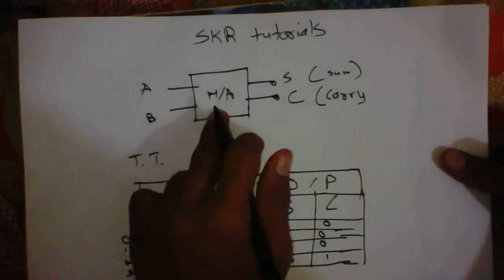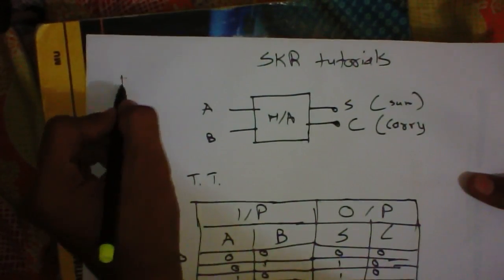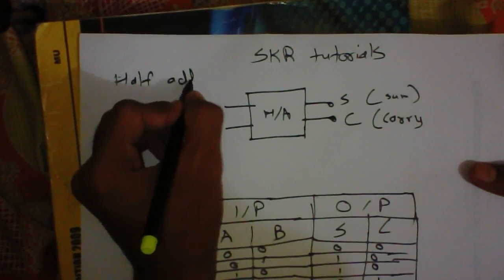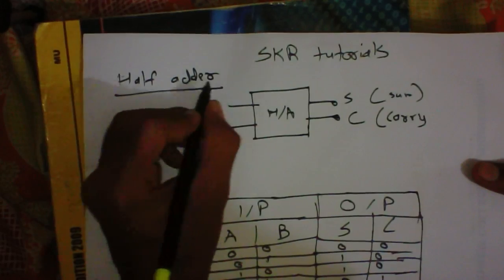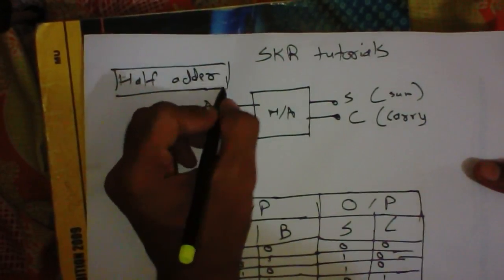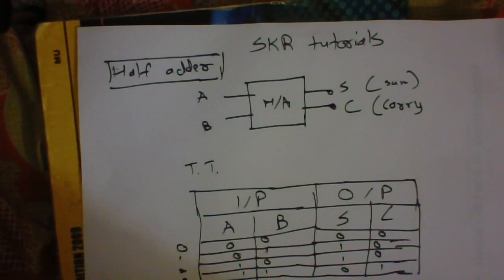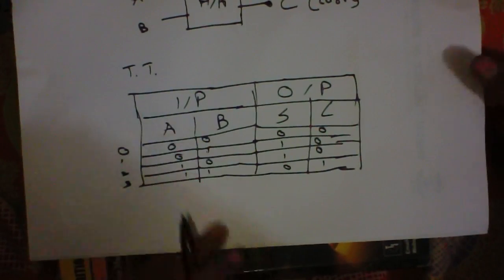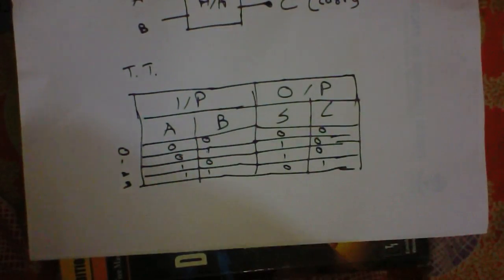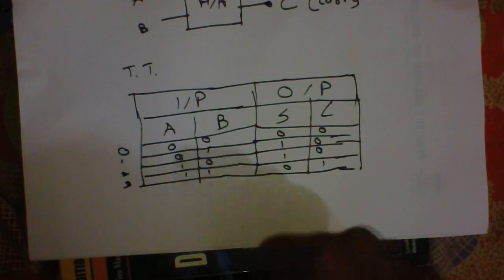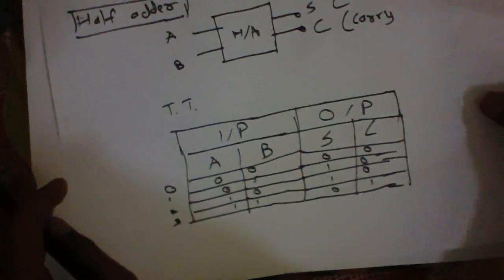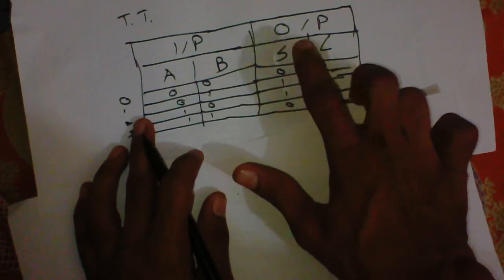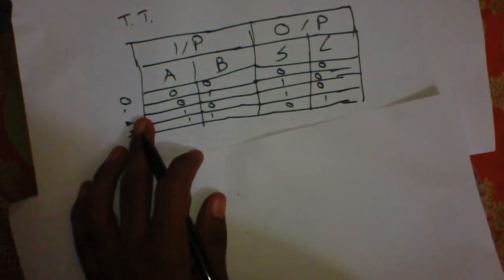So this is the block diagram of the half adder. We are discussing the half adder — it is an arithmetical circuit which is used in addition in circuits. This is the truth table of the half adder. From this truth table, let's make a K-map for the sum and carry. We have two outputs — sum and carry — so we have to make two K-maps.